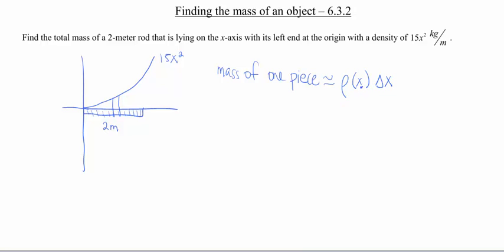The reason why that is, is because of how the formula works out for mass is density times volume. In this case, we don't really have a volume here, but our Δx is going to give us the width of each of those chunks. So our density function then is 15x². So then our mass of one piece is going to be approximated then by 15x² times Δx.